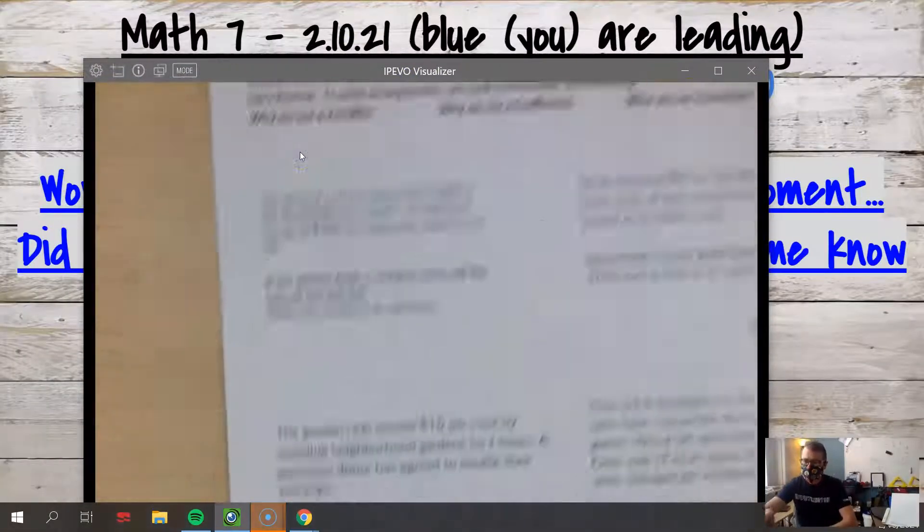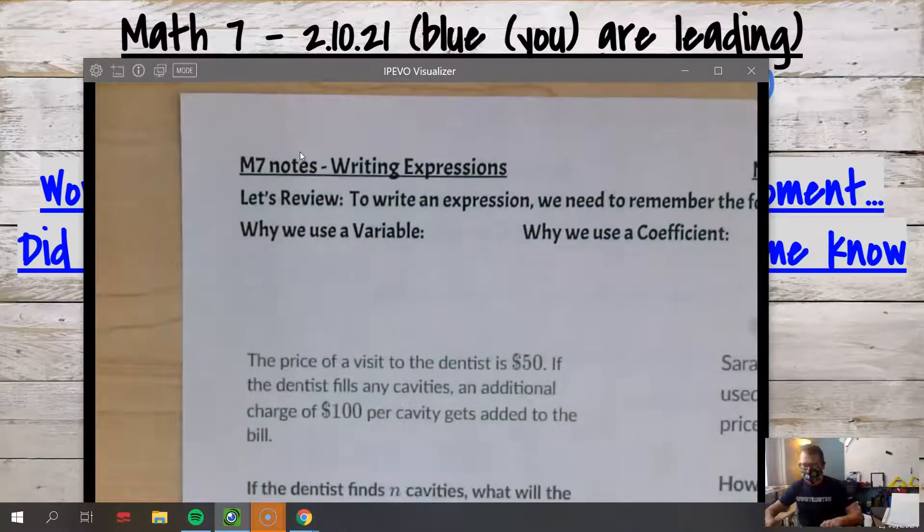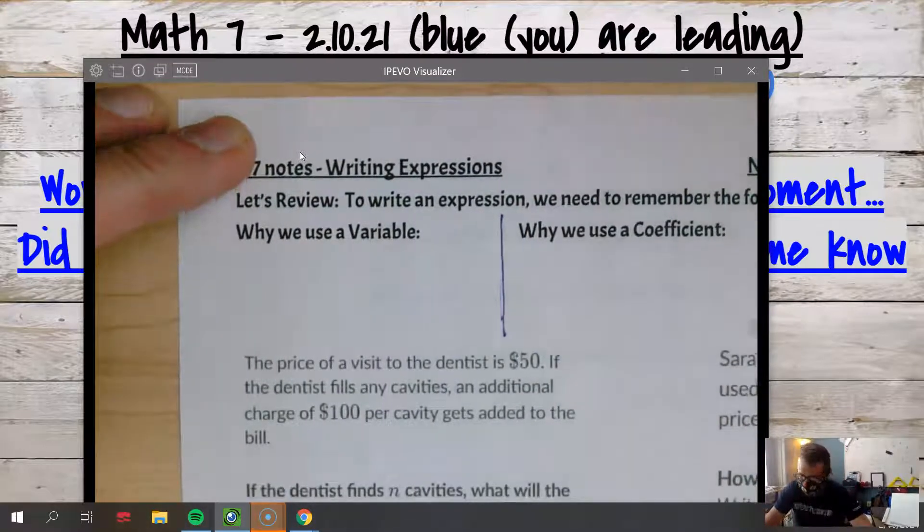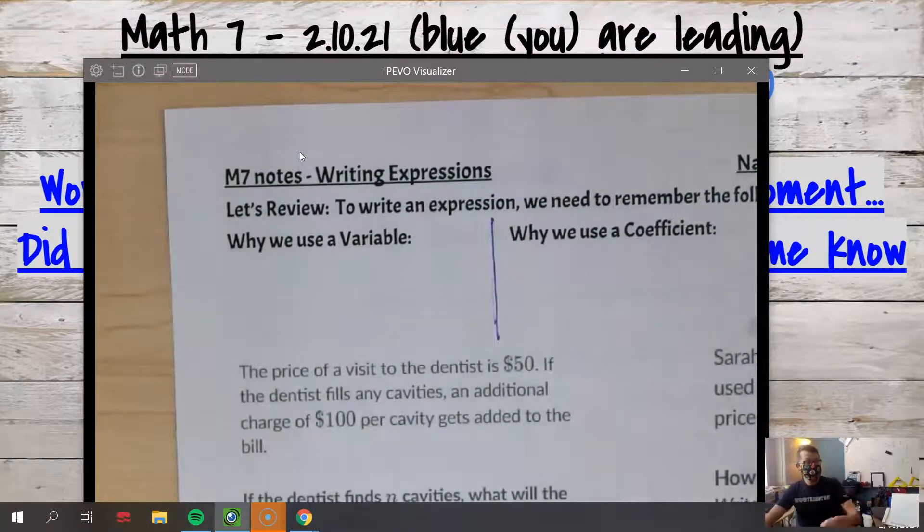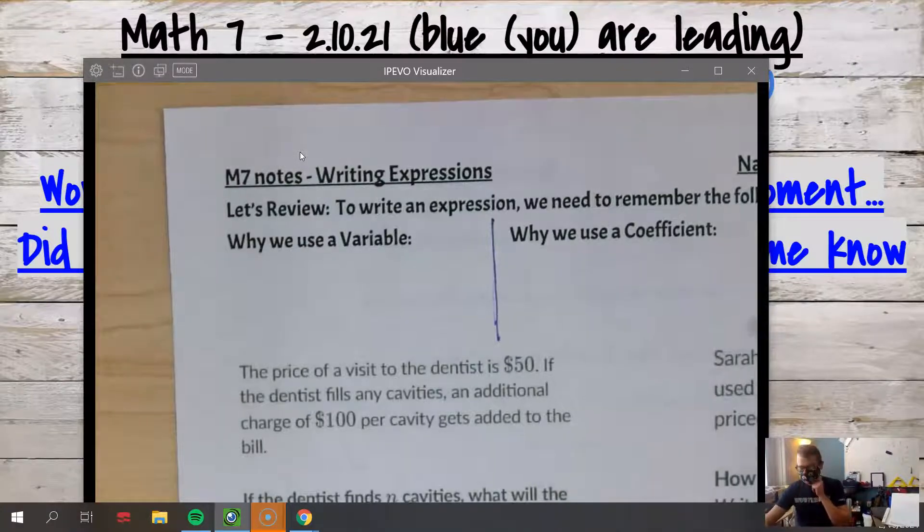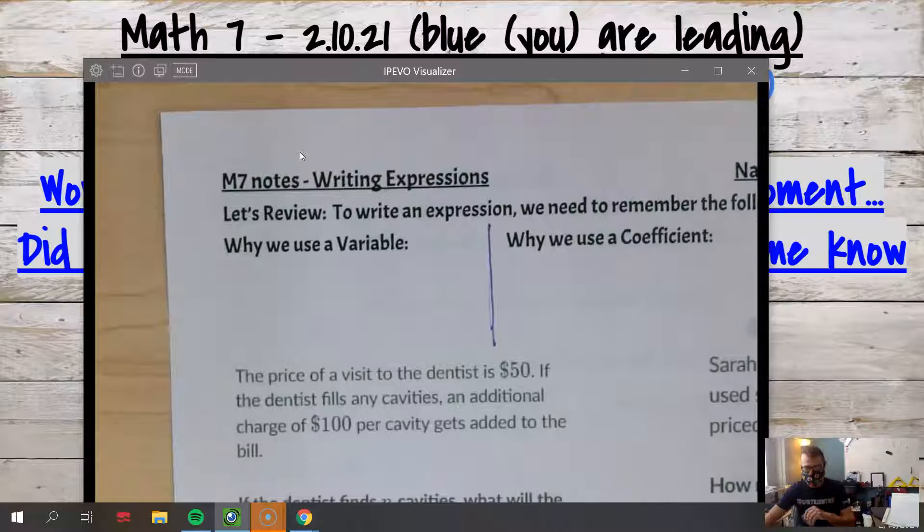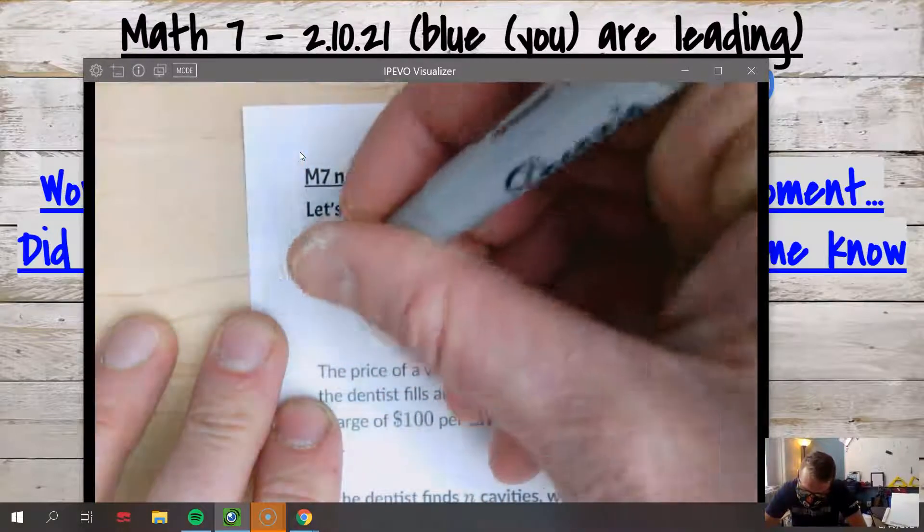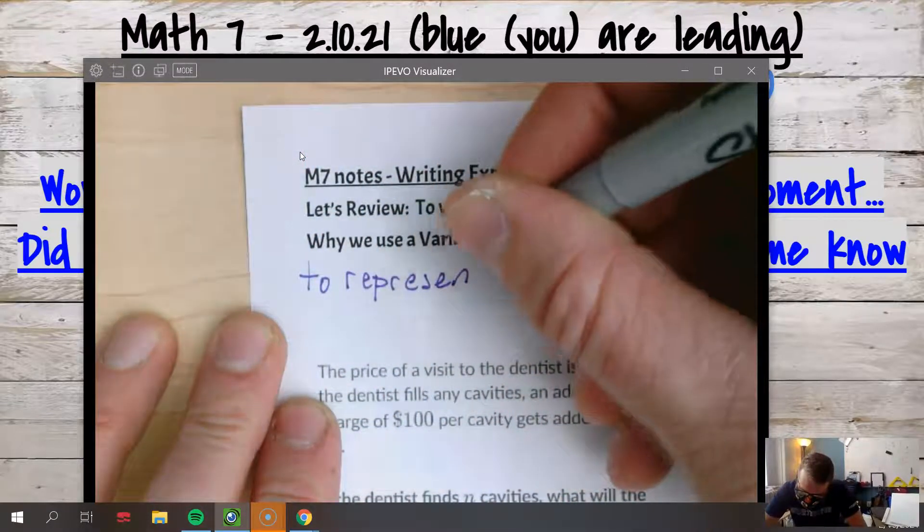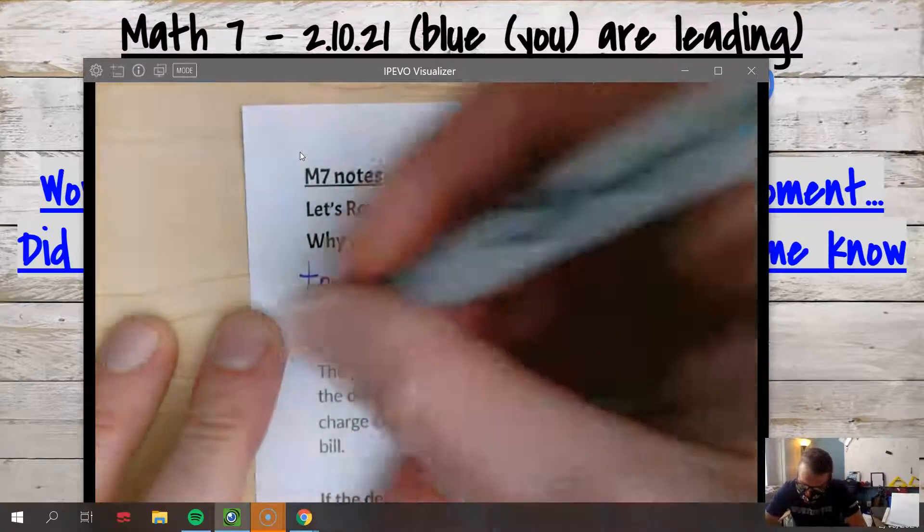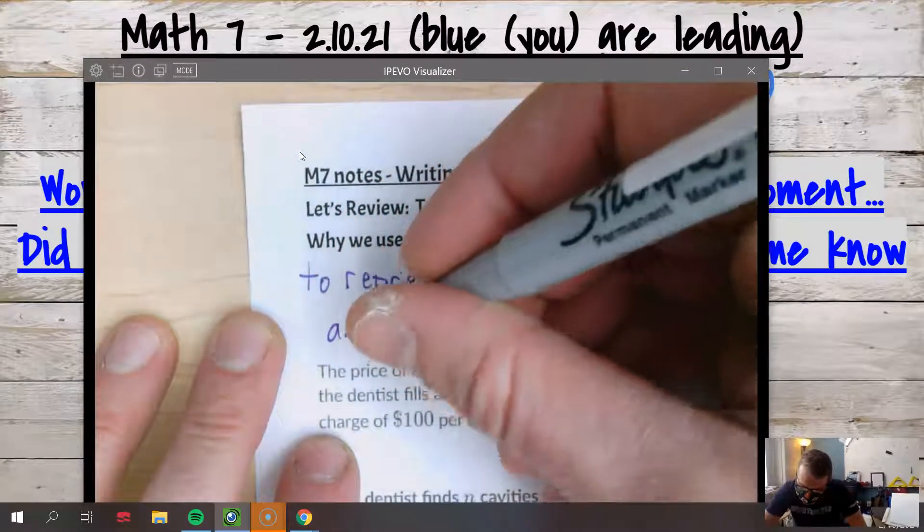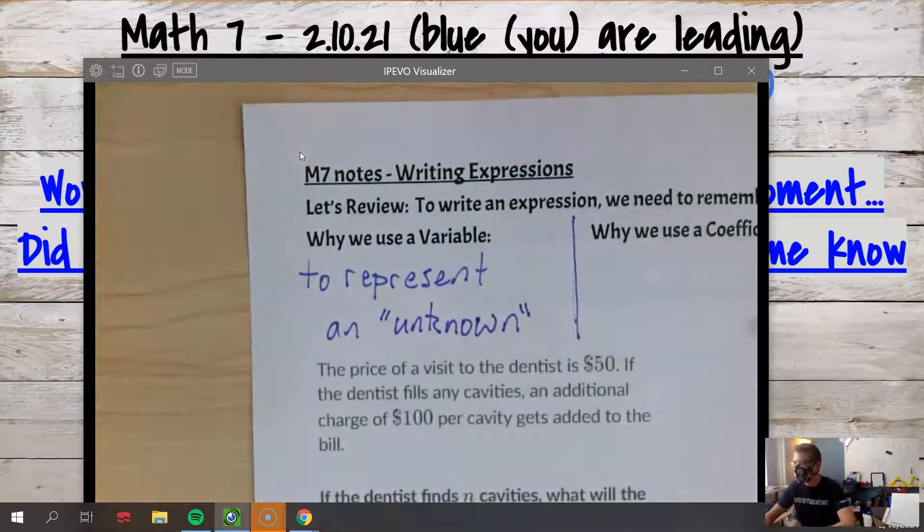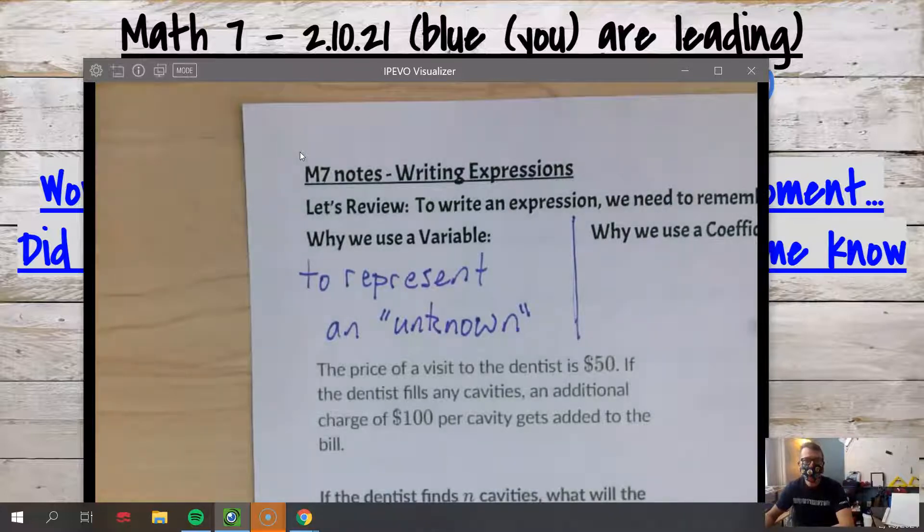Would anyone like to volunteer to tell us why we use a variable? And again, I'm going to section my page vertically. Yeah, we use a variable to represent an unknown.